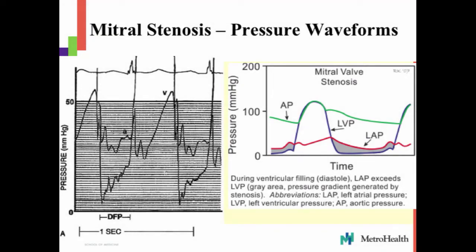This guy also has a large V-wave, which is an incidental finding here. I'm sure this guy also has mitral regurgitation, and we'll talk about it in the next section. But what I want you to pay attention to is the gradient between the left atrium and the left ventricle in diastole — this is what the left atrium has to work to overcome to open up the valve.